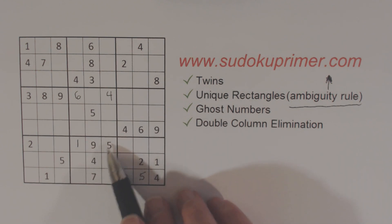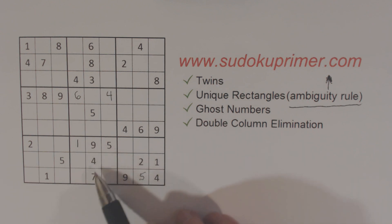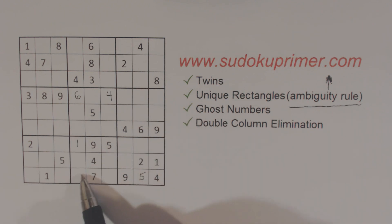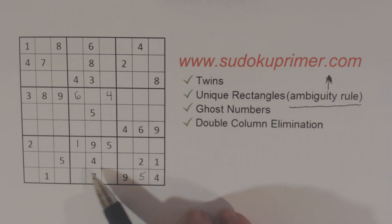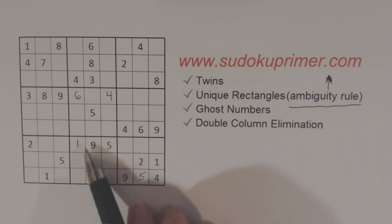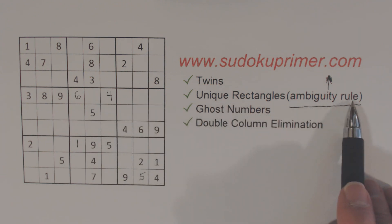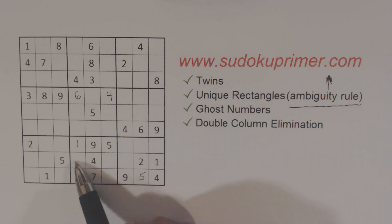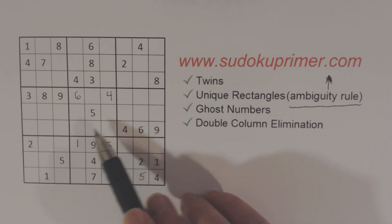Now let's look at box eight. What are we missing? We're missing two, three, six, and eight. A two can go here or here. A three can go anywhere. A six can go here or here because of that six. And an eight can go in any of these four cells. Now, because we have three-eight twins here and because of the ambiguity rule, we know that we can't have three-eight twins here, and also can't have three-eight twins this way or this way, because there's a three or an eight here and here already.